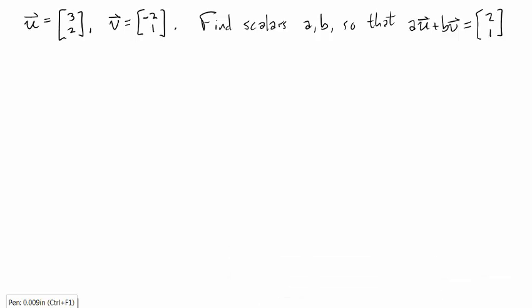We're given two vectors, u equals 3, 2, and v equals minus 2, 1, and we're asked to find scalars a and b so that a times u plus b times v is this given vector, 2, 1.